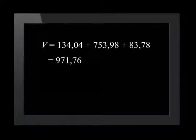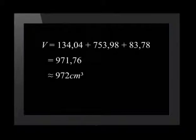Now that we have found the volume for each of the parts of the solid, let's add them together. This gives us a total of 971.76. The question asked to give the answer to the nearest cubic centimeter, so this rounds up to 972 centimeters cubed.